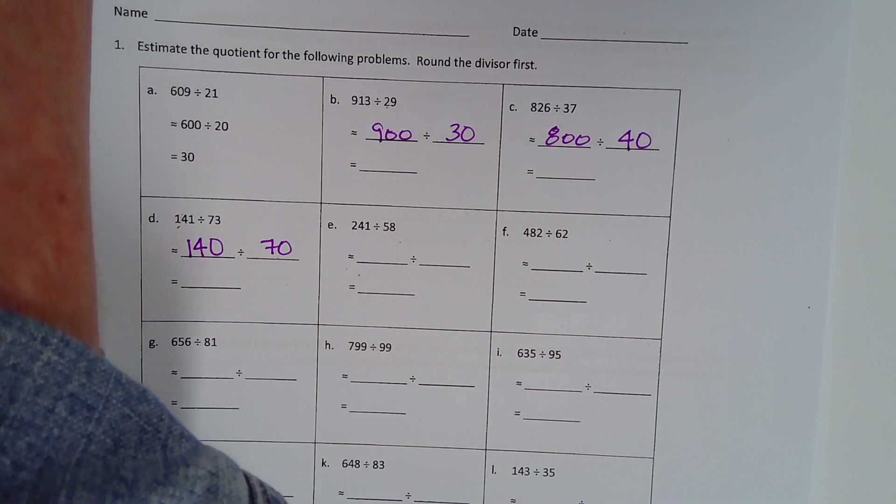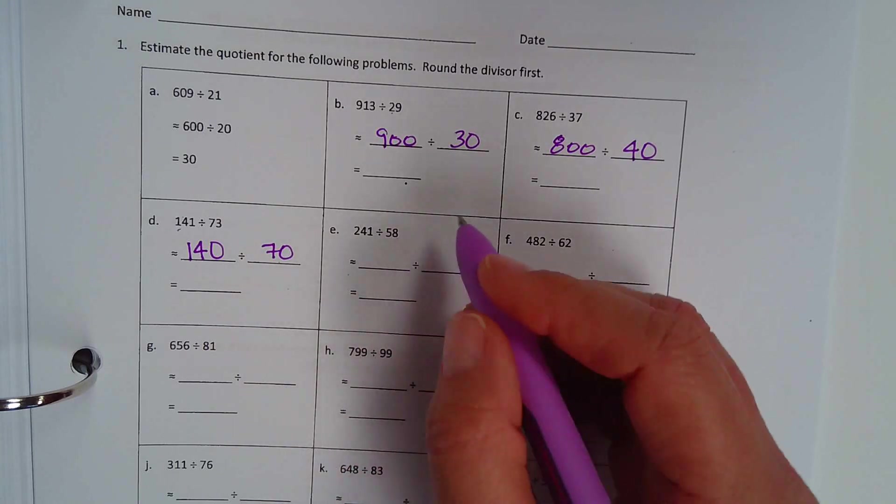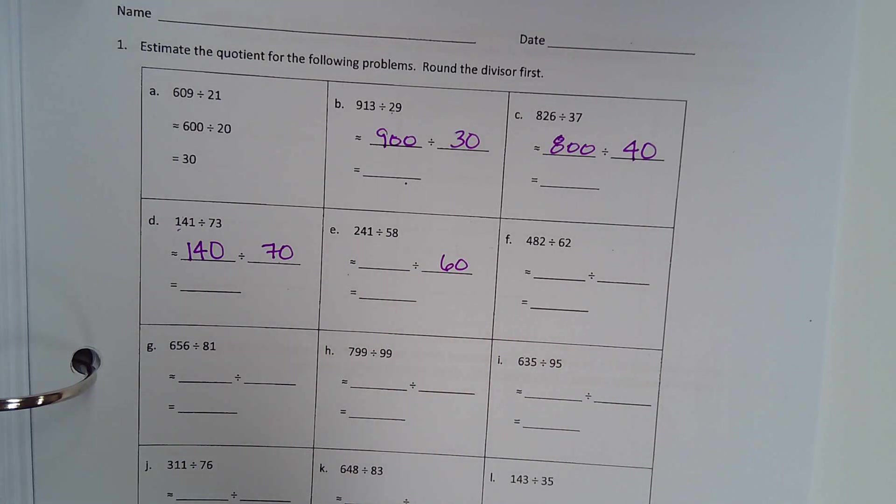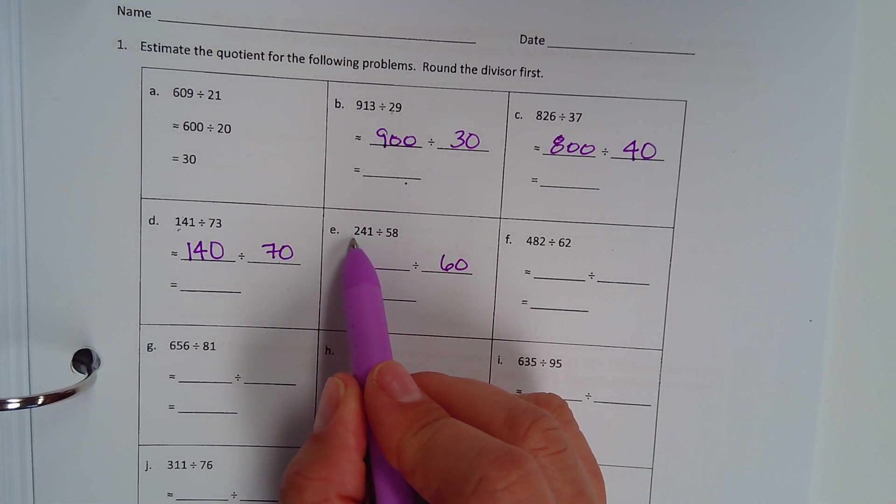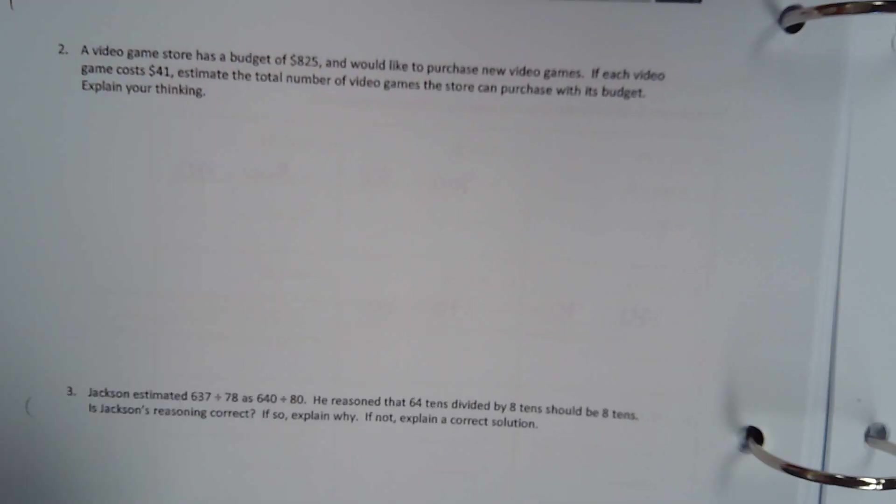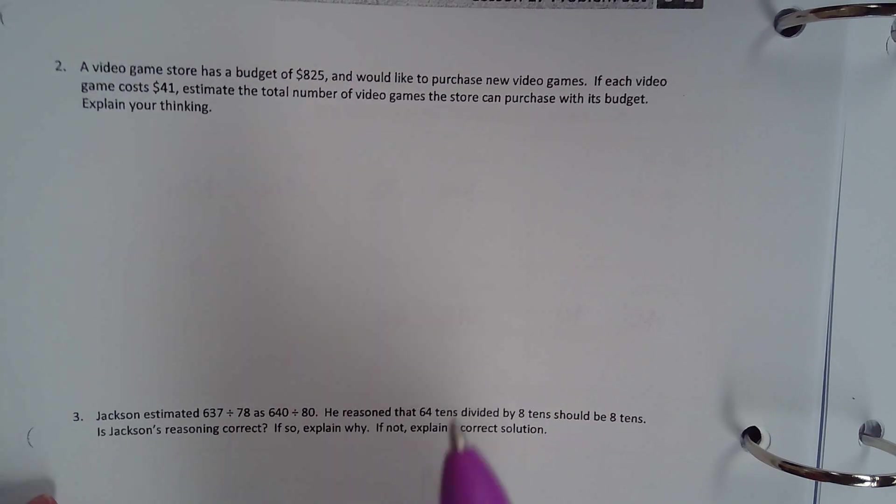All right. So then 58 would round to 60, and then, now, based on what you know about multiplication, what should I round 241 to to make it really easy to divide 60 into? All right. So now, on the back side, since you're getting the hang of the front side,